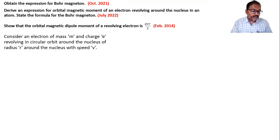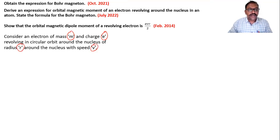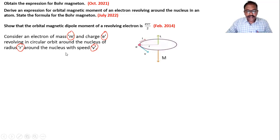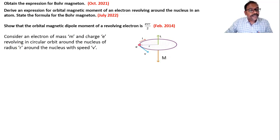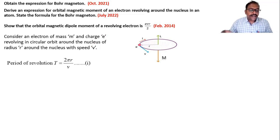We consider one electron whose mass is m and charge is e, revolving in a circular orbit around the nucleus with radius r and speed v. You can see in the diagram: the electron, radius, speed, angular momentum, magnetic dipole moment, and current — everything is shown in the diagram.